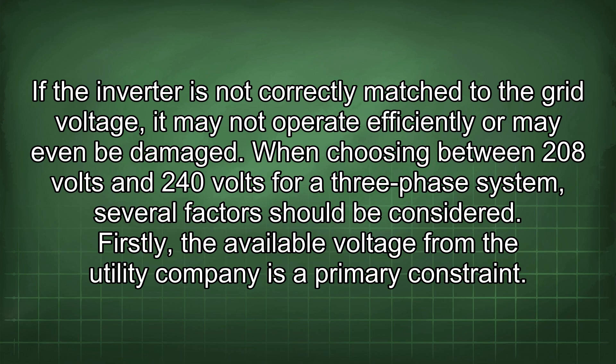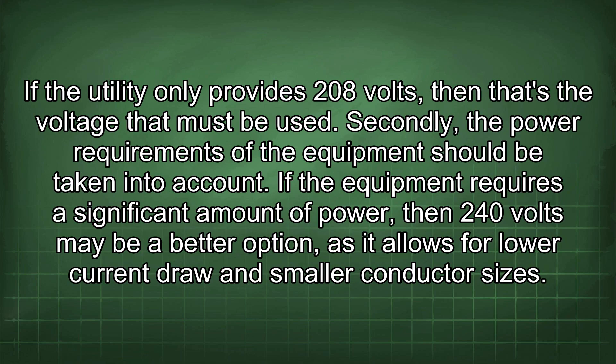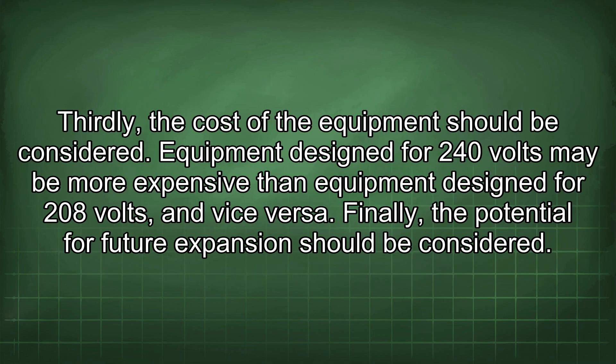When choosing between 208 volts and 240 volts for a three-phase system, several factors should be considered. First, the available voltage from the utility company is a primary constraint — if the utility only provides 208 volts, then that's the voltage that must be used. Second, the power requirements of the equipment should be taken into account; if the equipment requires significant power, 240 volts may be a better option as it allows for lower current draw and smaller conductor sizes. Third, the cost of the equipment should be considered, as equipment designed for 240 volts may be more expensive than equipment designed for 208 volts, and vice versa.